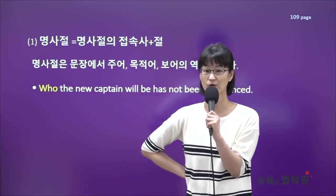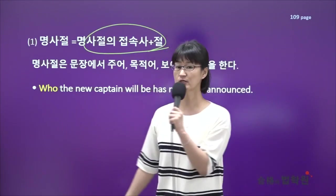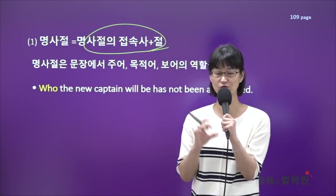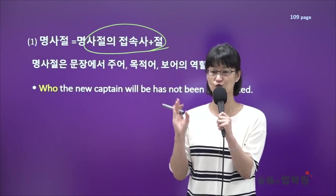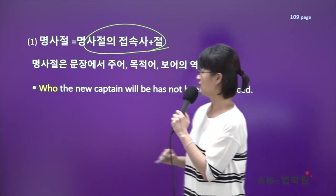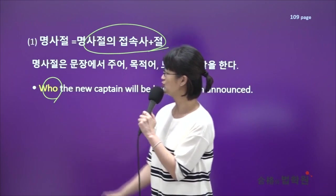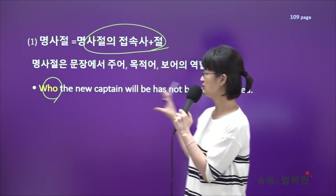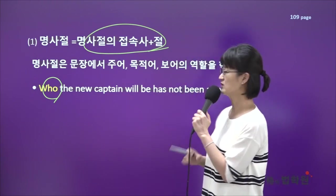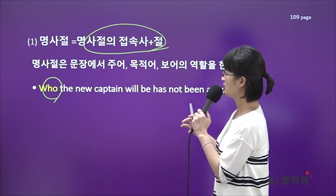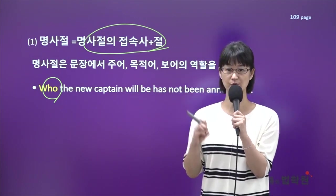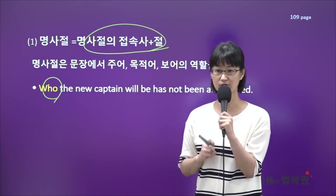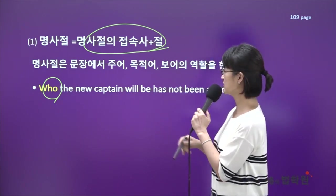명사절은 명사절의 접속사와 절이 한 덩어리로 묶인 형태죠. 명사는 문장에서 무조건 주어, 목적어, 보어 자리에 들어가기 때문에 명사절도 문장에 쓸 때 주어, 목적어, 보어 자리에 들어가요. 아직 접속사의 종류를 암기하지 않았기 때문에 명사절의 접속사는 노란색으로 표시를 해드렸어요. 명사절의 접속사는 종속접속사의 일종이니까 문장에서 절과 절을 연결시키고, 즉 동사 두 개를 연결시킵니다.